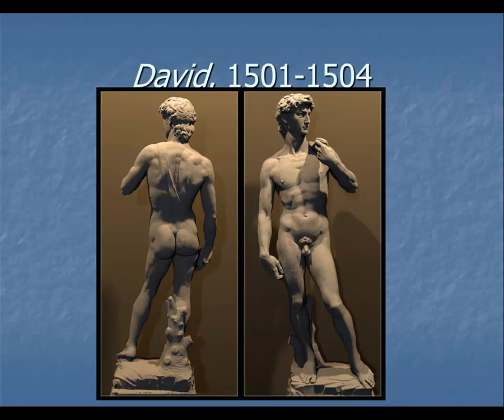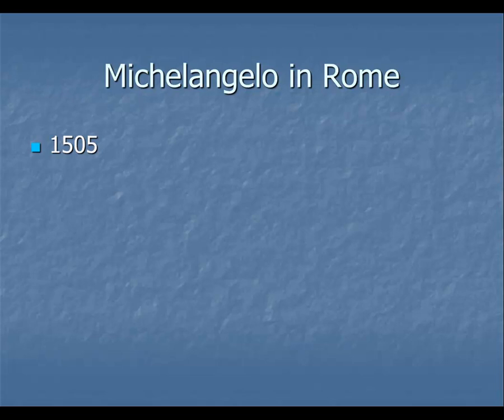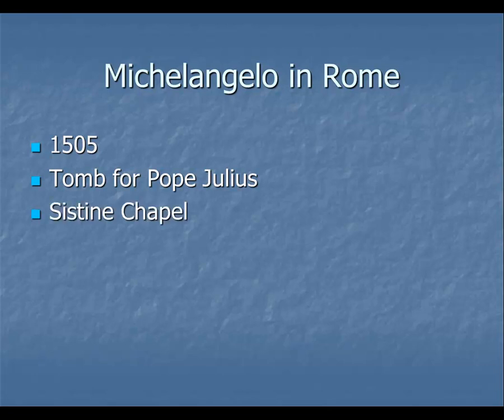In 1505, the pope summoned Michelangelo to Rome to construct a tomb for him. The tomb was never fully finished because Michelangelo kept getting interrupted, and then Julius died and the new pope didn't care much about Julius's tomb. Part of it was finished — the Moses section — and you can find that in your textbook.